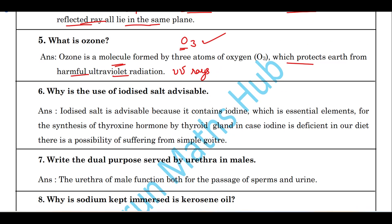Why is the use of iodized salt advisable? Iodized salt is advisable because it contains iodine, which is very essential for the synthesis of the hormone thyroxine by the thyroid gland. In case of iodine deficiency in our diet, there is a possibility of a disorder called simple goitre.